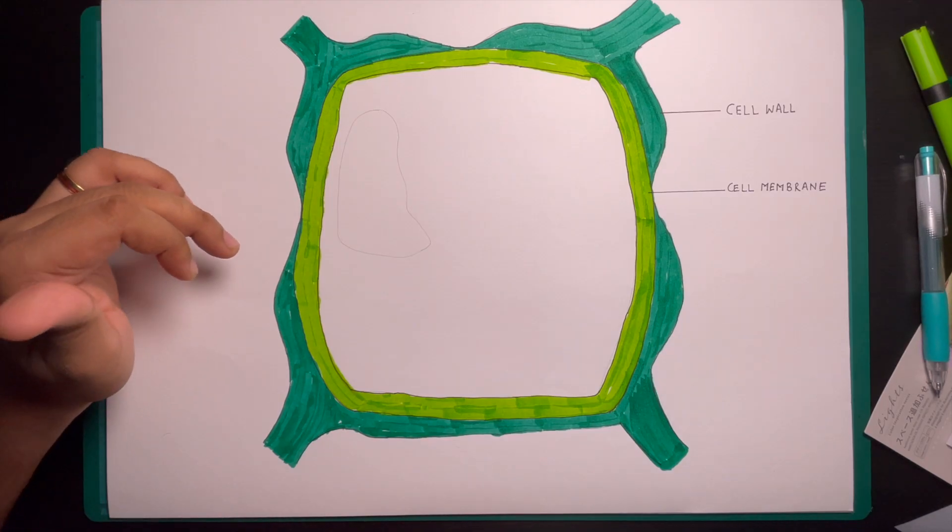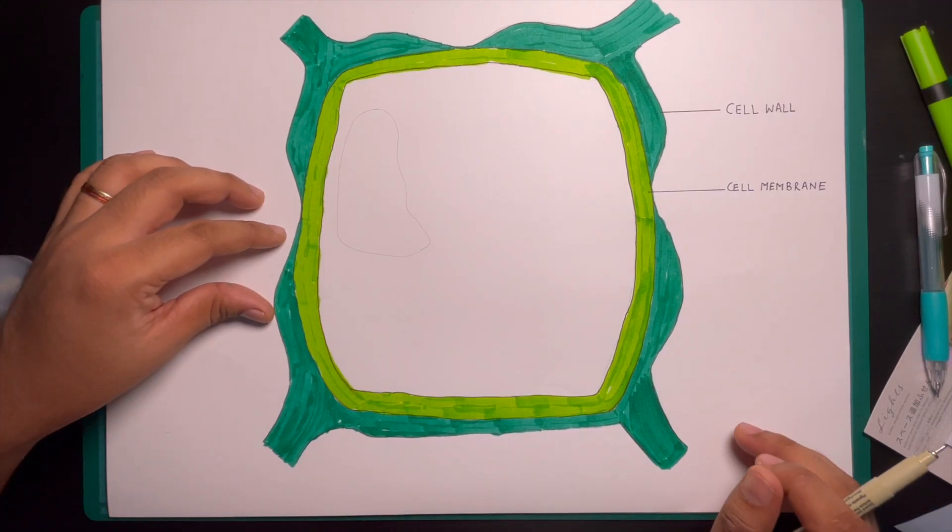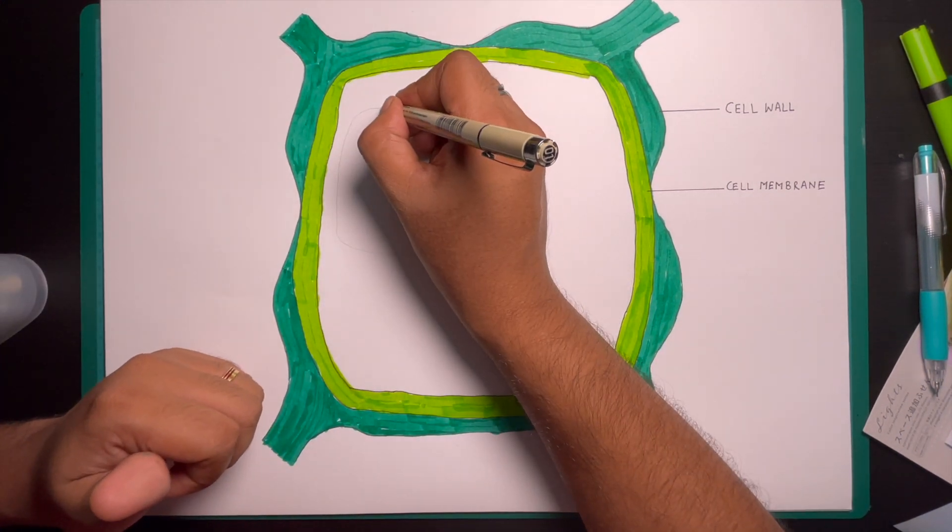Now let us see the main organelles that are present in the cytoplasm of the plant cell and their functions. First is the vacuoles.